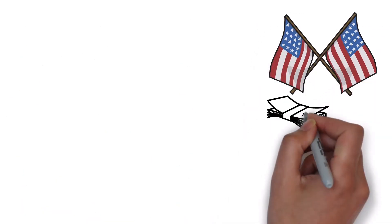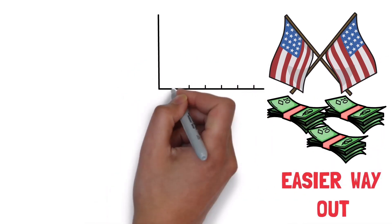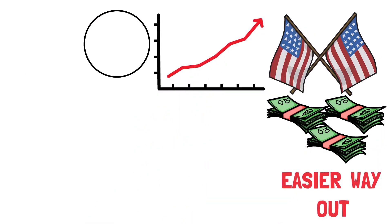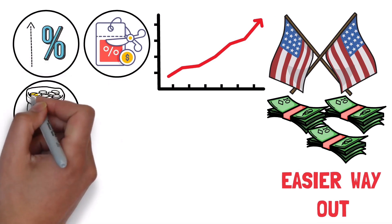In the US, we've seen a lot of money printing because it's the easier way out, but it's also caused high inflation. Now, the US needs to cut its spending and increase taxes to fix its worsening budget problem and avoid a big debt mess.